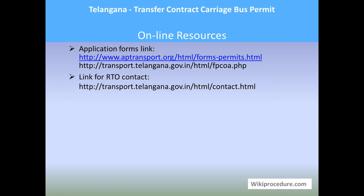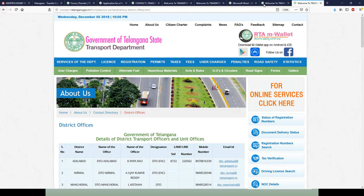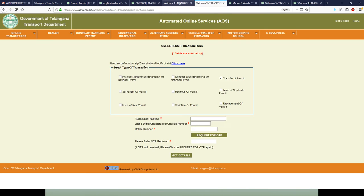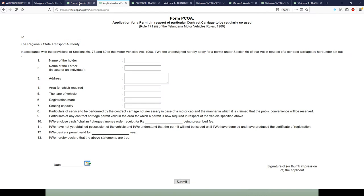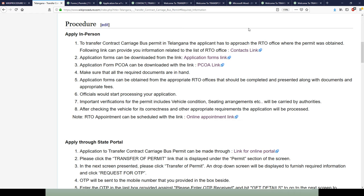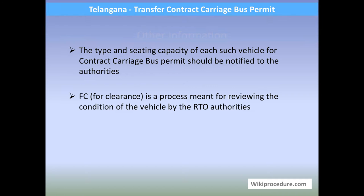Online resources: we have seen the permit-related forms link, application form link, and contact pages — all very important to complete this application and provided as links for your convenience. Other information: the type and seating capacity of each vehicle for the contract carriage bus permit should be notified to the authorities. FC — fitness clearance — is a process meant for reviewing the condition of the vehicle by the auto authorities. Thank you for visiting WikiProcedure.com to learn how to transfer a contract carriage bus permit in Telangana.